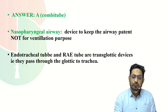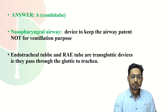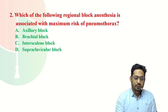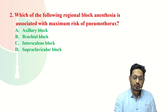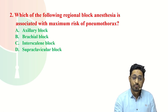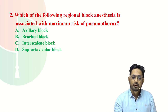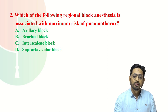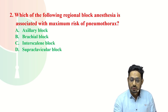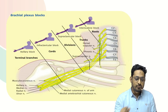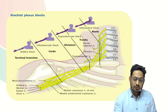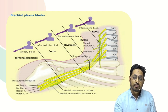So the answer for the question is A — combi tube. Now the next question is: which of the following regional block anesthesia is associated with the maximum risk of pneumothorax? The options are axillary block, brachial block, interscalene block, and supraclavicular block. All these options are blocks used for upper limb surgeries, as shown in the picture.